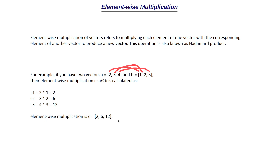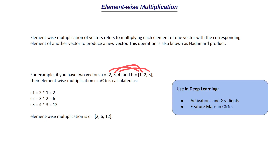Now let's see how element-wise multiplication is used in deep learning. The first application is in activation functions and gradients. Activation functions like ReLU (Rectified Linear Unit) are applied element-wise to the output vector of neurons. After a neuron performs a linear transformation, non-linear activation functions like ReLU or Leaky ReLU are applied element-wise to the output vector. Also during back propagation where weights are updated, the gradients are computed and applied element-wise as well.